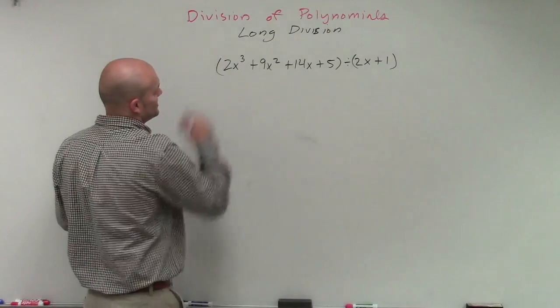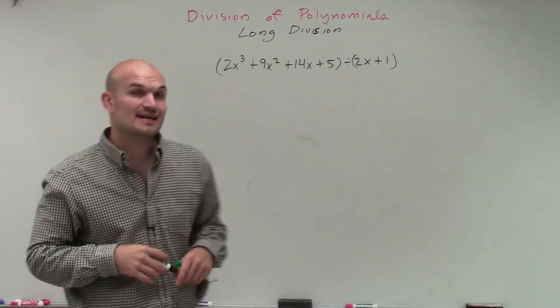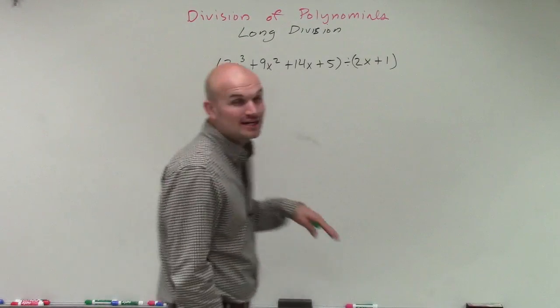Welcome. So what we have here is 2x cubed plus 9x squared plus 14x plus 5 divided by 2x plus 1.